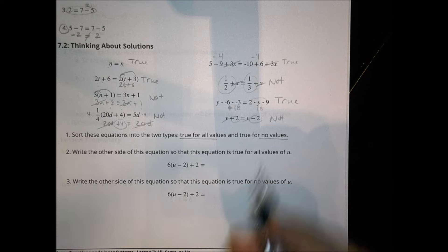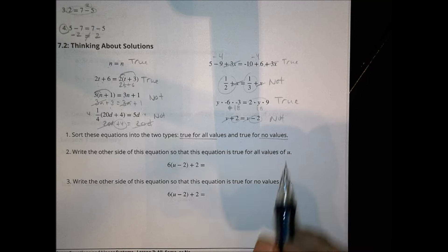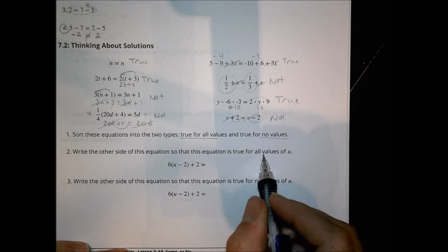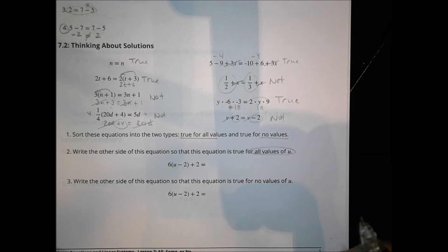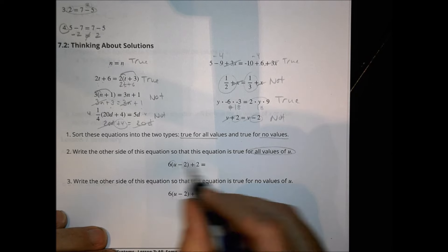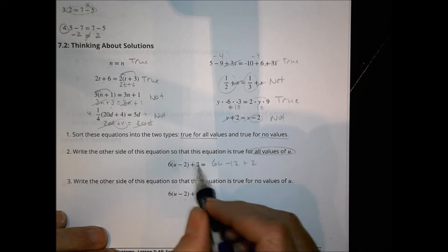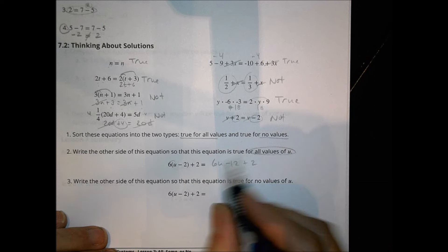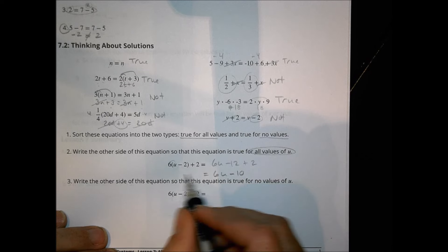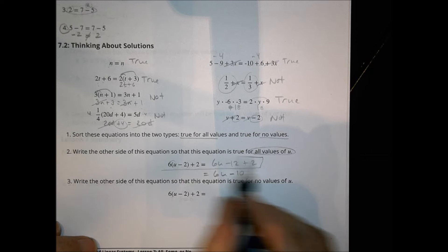So what we're looking at really is trying to set it up so that we have equal values, equal expressions, and the equal sign actually means equal. It says write the other side of the equation so the equation is true for all values of u. We want to write something that would be basically the same. So I could distribute and say 6u minus 12 plus 2, rewrite it there — that's going to be true for all values of u. I could also rewrite that as 6u minus 10, taking it a step further, and even though they don't look the same, it would still be true for all values of u.